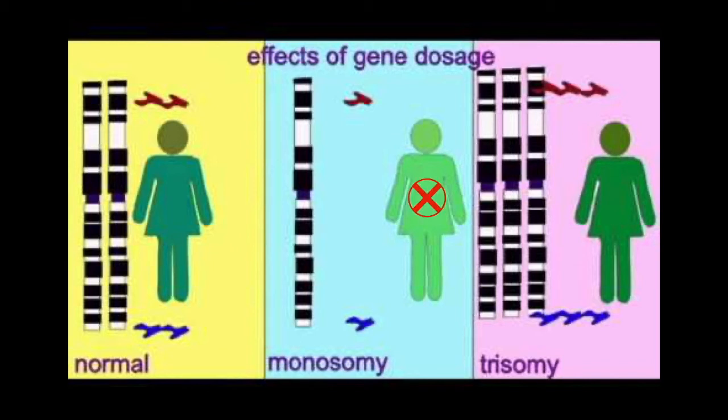With a trisomy, the opposite is true — you get hundreds or thousands of genes with extra dosage of product produced, which with few exceptions is also not survivable. And when it is survivable, it leads to severe defects throughout the body.